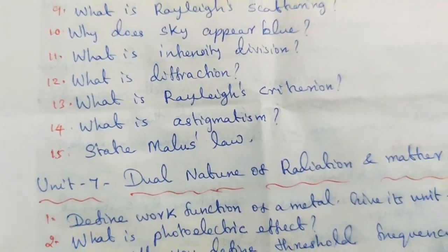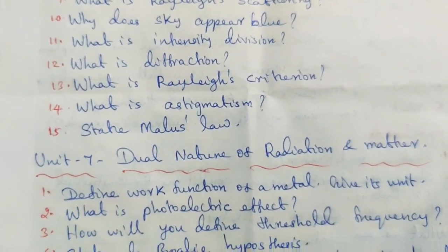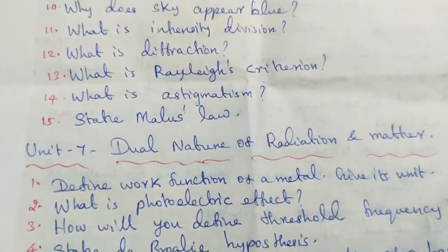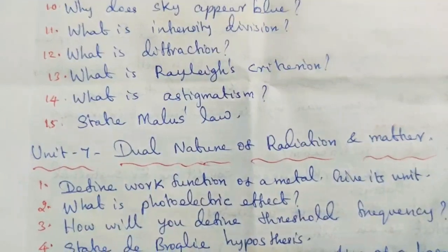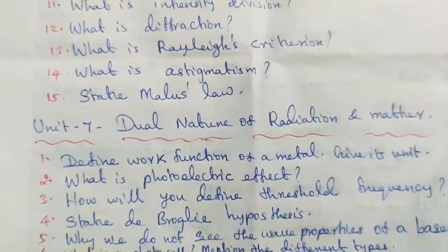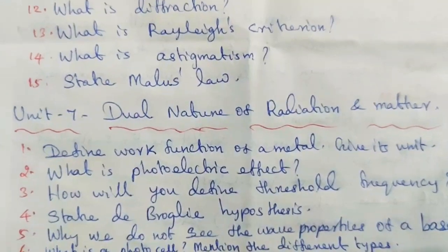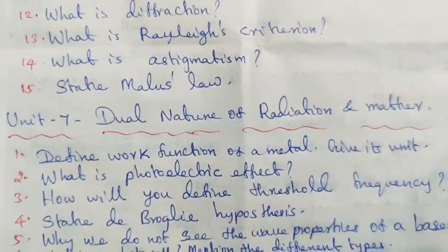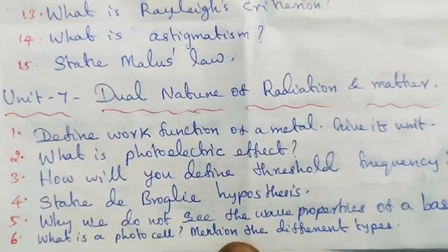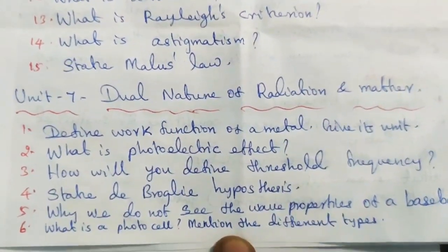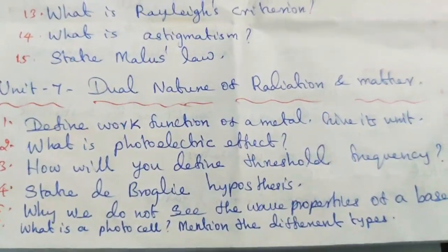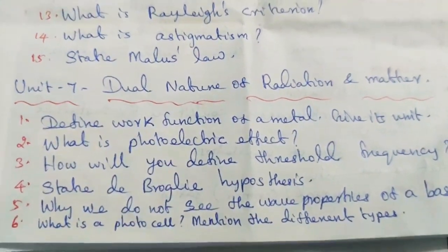Unit 7: Dual Nature of Radiation and Matter. Define work function of a metal — give its unit. What is the photoelectric effect? How will you define threshold frequency? State de Broglie hypothesis. Why do we not see the wave properties of a baseball? What is a photocell — mention the different types?